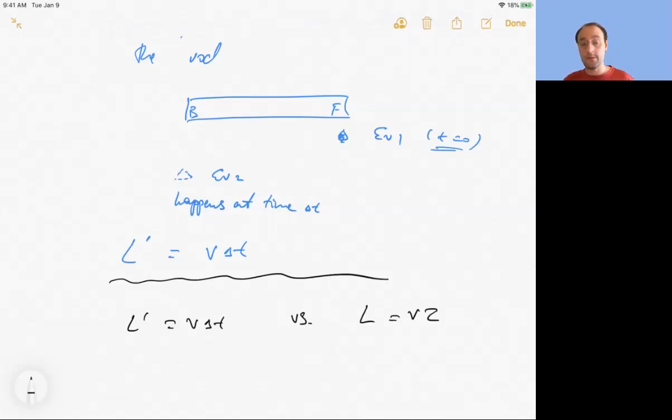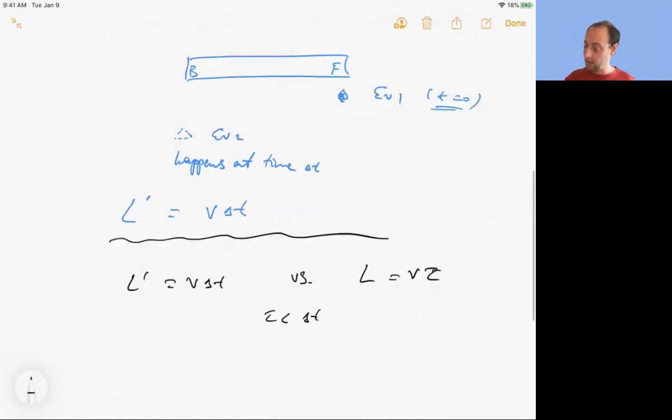So now what we have is we have L prime equals V delta t versus L equals V times tau. And which one is larger? In the frame at which the rod is moving, the two events happen at the same location. So the time interval between the pair of events measured in that frame is less than the time interval between the same pair of events measured in the other frame. You see, tau is less than delta t. So you conclude that L is less than L prime. So therefore, the person who is moving relative to the rod will conclude that the rod is shorter than the person who is at rest relative to the rod. And this effect is called length contraction.